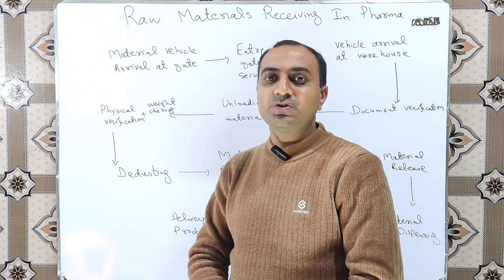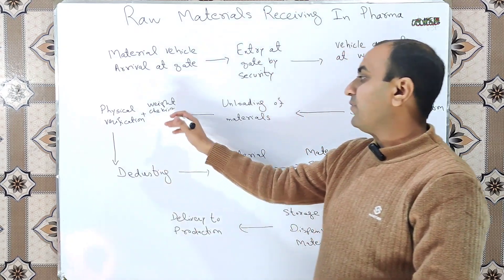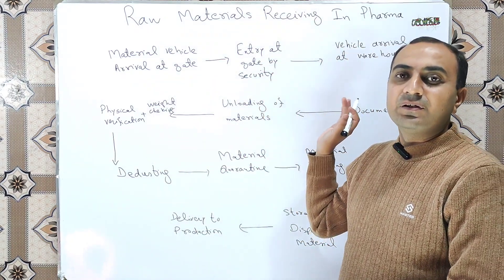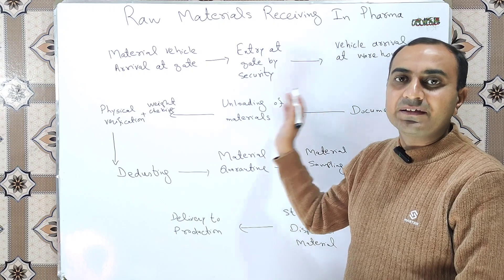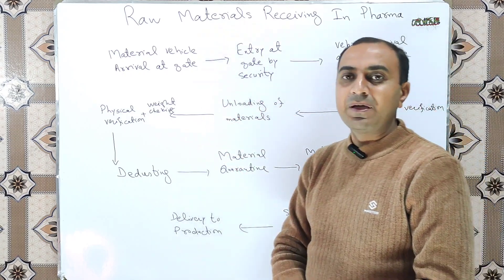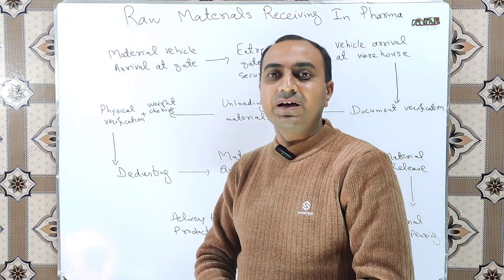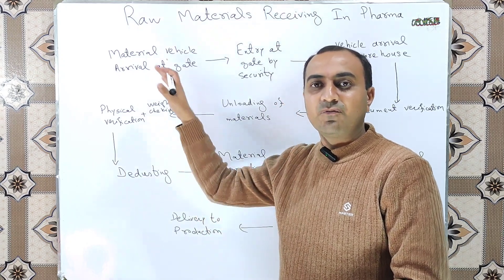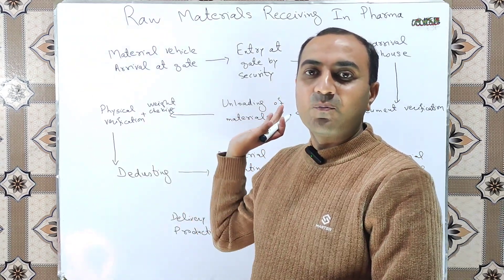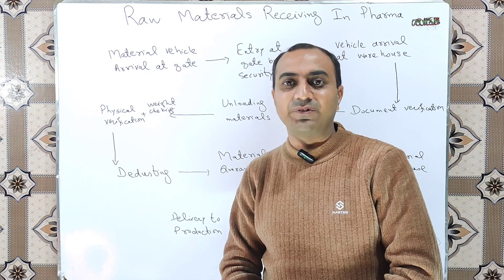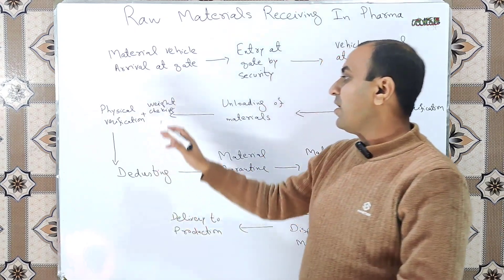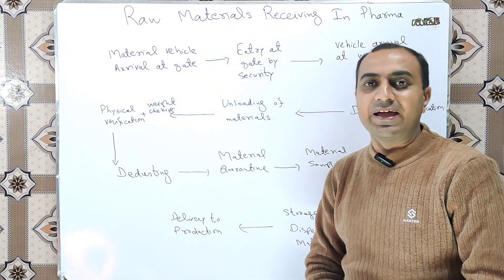After unloading, physical verification is done — it is physically checked that there is no damage to the containers, and the weight of each container is also checked. We will discuss in detail all the activities performed at each step. Here we are discussing the brief flow chart of the material from arrival till dispensing and delivery to the manufacturing area.